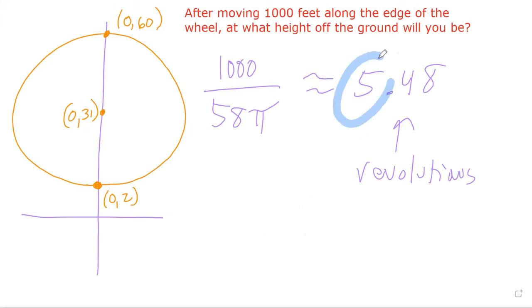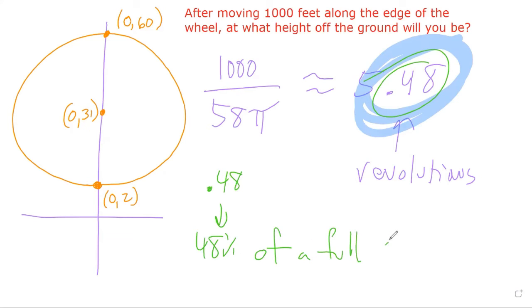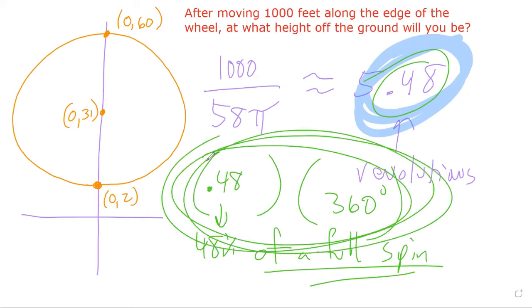We should really ignore this five for now because the number of complete spins doesn't matter. What matters is the residual spin. We have to focus on 0.48 spin. Why don't we look at 0.48 as being about 48%, 48% of a full spin. Now a full spin is 360 degrees. So what we should really do is multiply these numbers together. We should take 48% of 360 degrees. This gives us back about 172.8 degrees.